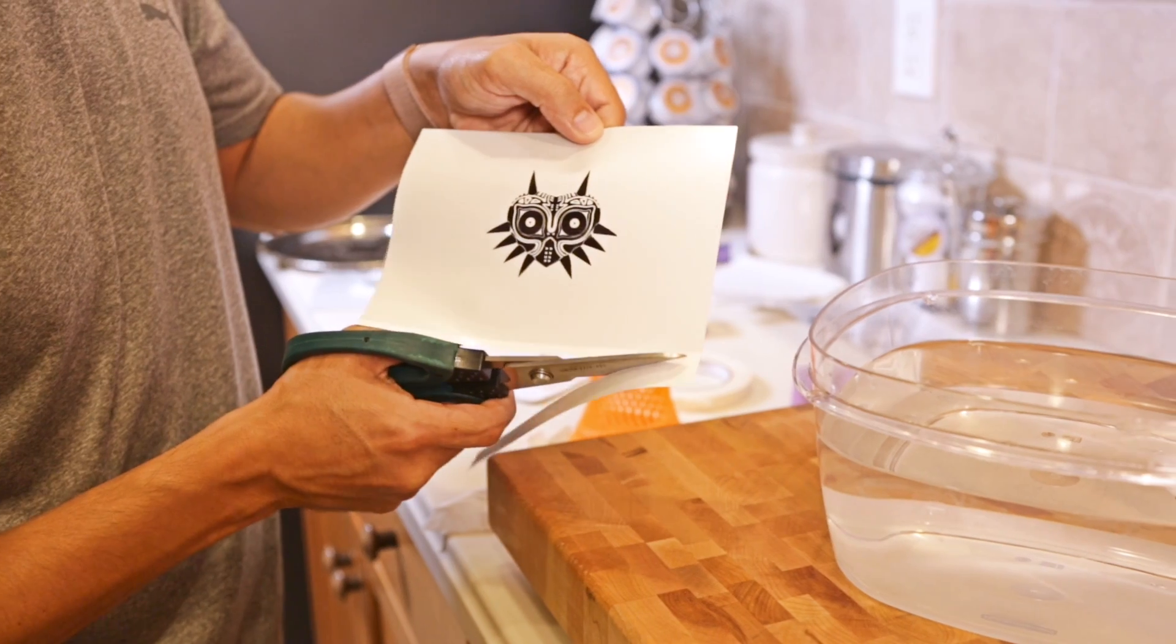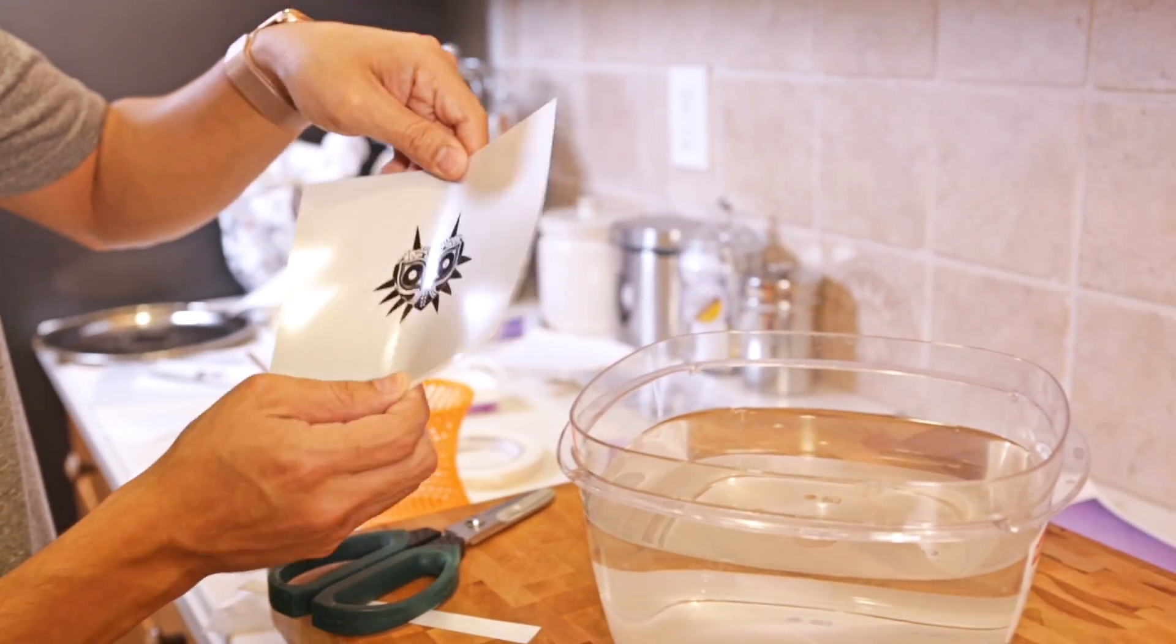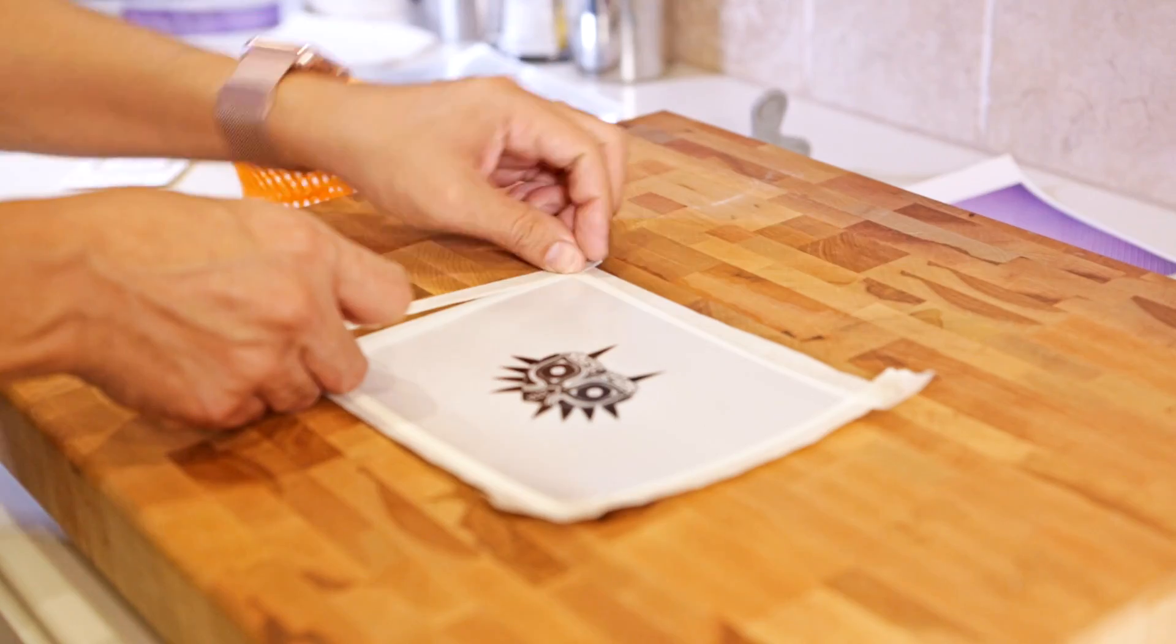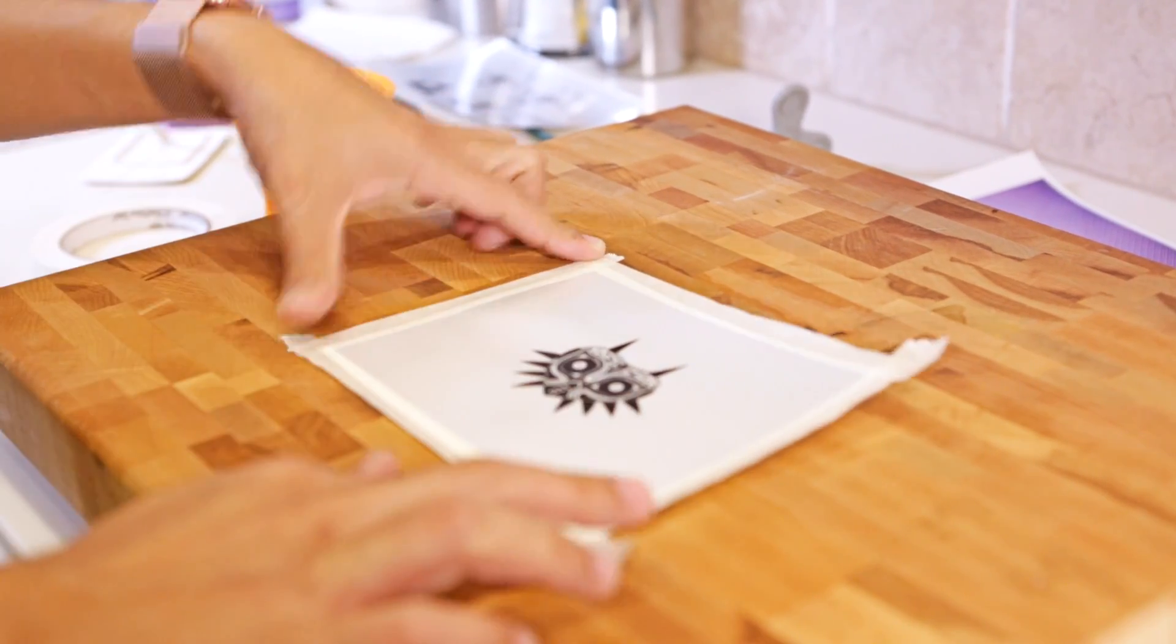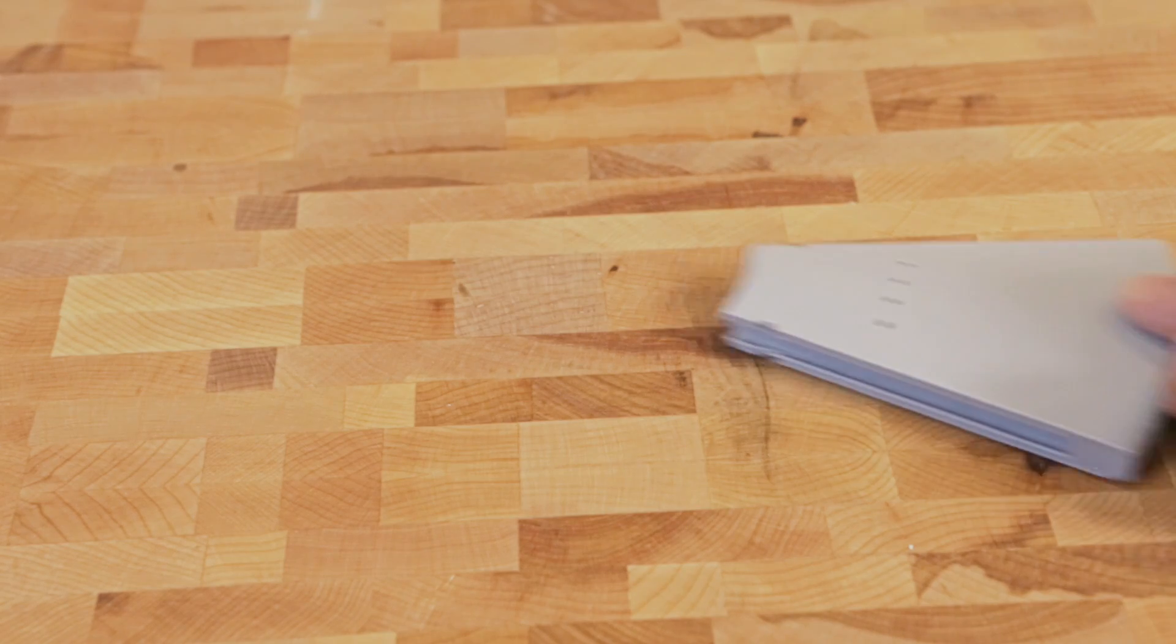After printing our graphics, we need to cut the paper down to size so it can fit inside of our container. We used masking tape to create a frame around the paper. This is really helpful because it makes separating the two layers easier. The tape also helps keep the graphics together as the PVA film dissolves in water.